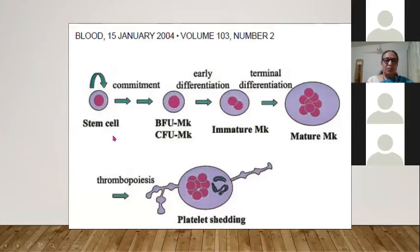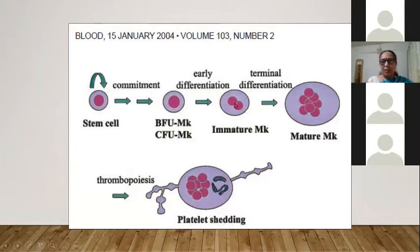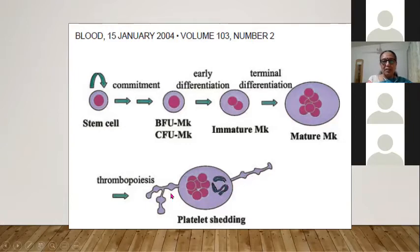Looking at this cartoon published in the journal Blood, it nicely shows that starting from a stem cell committing to a BFU and CFU megakaryocytic, it differentiates into early and immature megakaryocytes, then terminal differentiation forms a mature megakaryocyte.